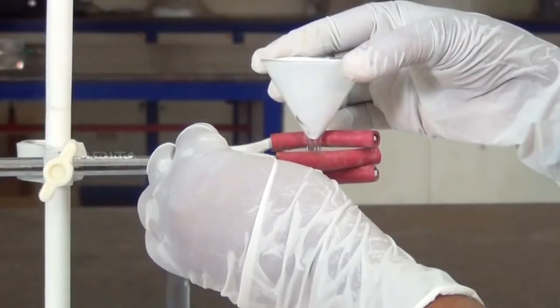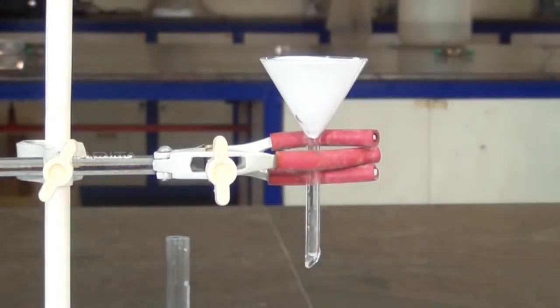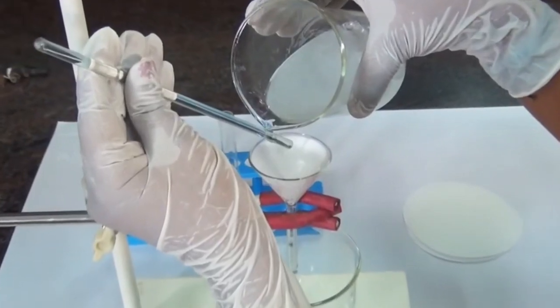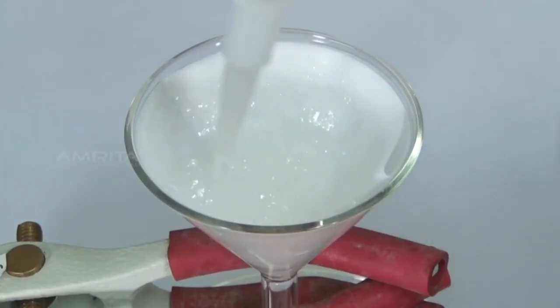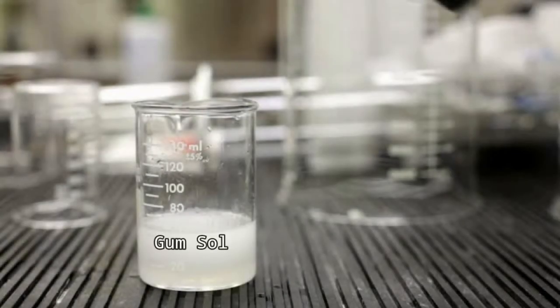With the help of a filter paper and a funnel, filter out the contents. Wait till the mixture cools down. Label the filtrate as gum sol.